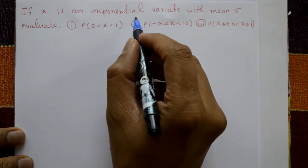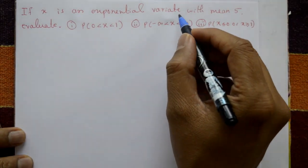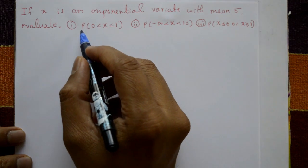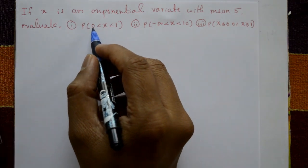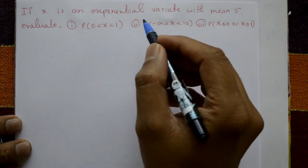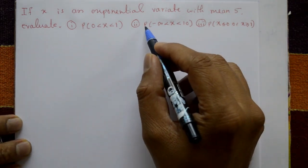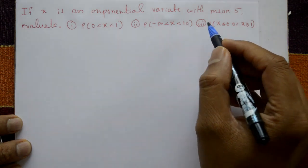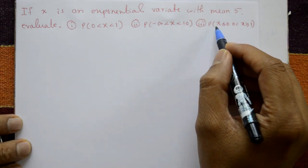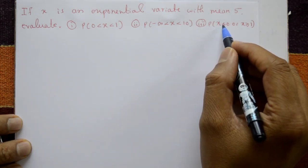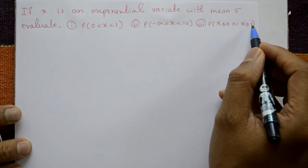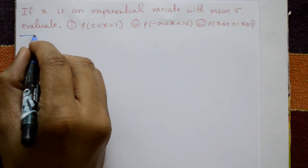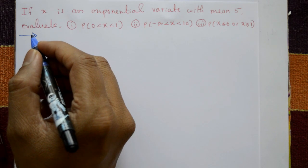If x is exponentially distributed with mean 5, evaluate: (1) probability of 0 less than x less than 1, (2) probability of minus infinity less than x less than 10, and (3) probability of x less than or equal to 0 or x greater than or equal to 1. We will solve these using the exponential distribution.